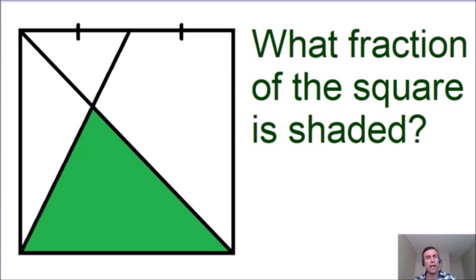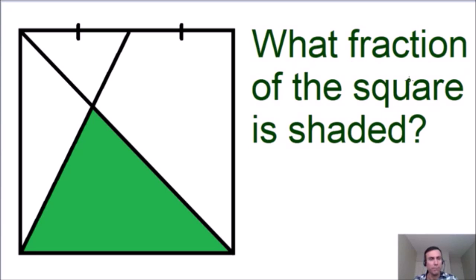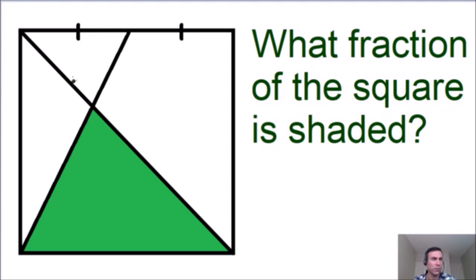In this riddle we have a square and we need to find out what fraction of the square is shaded. In the square we have two lines: one line that's separating one side into two equal parts, and another line that's creating a diagonal with the square. The problem is: what fraction of this square is shaded in green? Take your time, work on this problem, and I will show you the solution in five seconds.